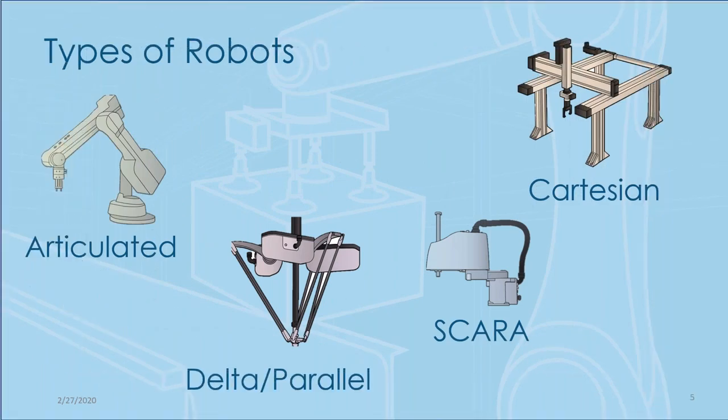That was talking about the why. Now I want to talk a little bit about the how — the tools in our toolbox. We have four typical types of robotics: the articulated robot arm, the delta and parallel (sometimes called spider robots), SCARA units, and Cartesian, sometimes called gantry robots. Each has advantages, disadvantages, and typical applications.